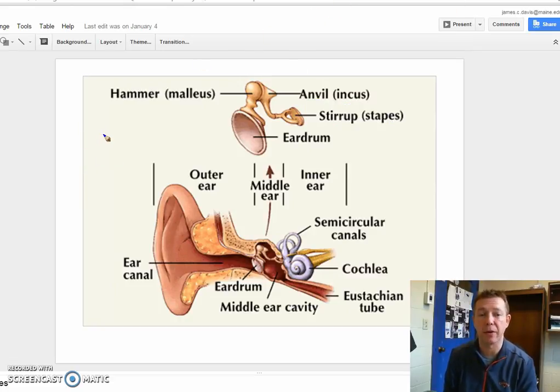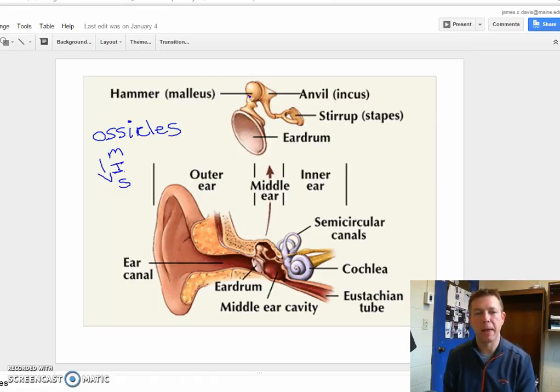Those three bones together are collectively known as the ossicles. The ossicles, the malleus, the incus, and the stapes. Going in that order. So attaching from the eardrum, we can go to the malleus first, then the incus, and then our stapes. So those three bones sit right within our middle ear cavity.